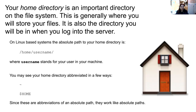My home directory is an important directory on the file system — this is generally where you would store your files, and it's also the directory that you'll be in when you log into the server. On Linux-based systems, the absolute path to your home directory is slash home slash username, where username is your name on the system. Your home directory is also abbreviated in a few ways: you'll often see it abbreviated as the tilde or squiggle, and you may also see it abbreviated as $HOME in all capital letters. Since these are abbreviations of an absolute file path, they work like absolute file paths even though they don't start with a slash.